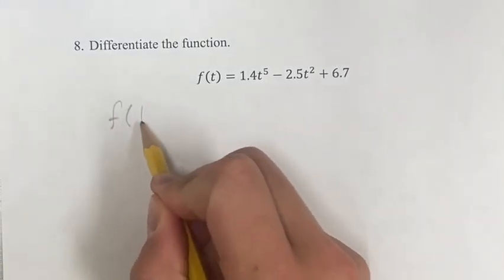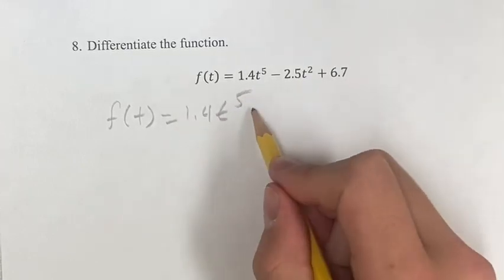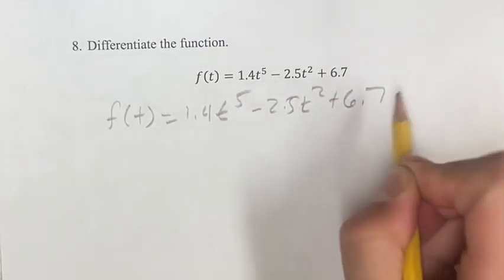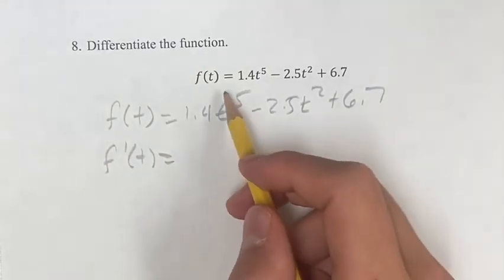Just writing it out again right here. First thing we're going to do is we're going to start with this term, and we're going to go down the line. So, f prime of t, the derivative, starting here.